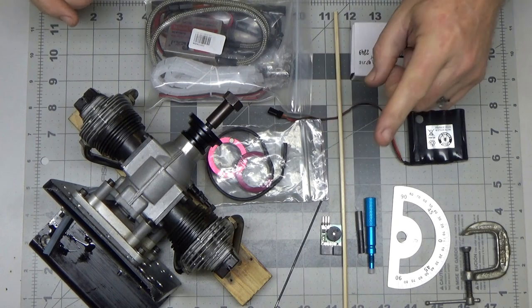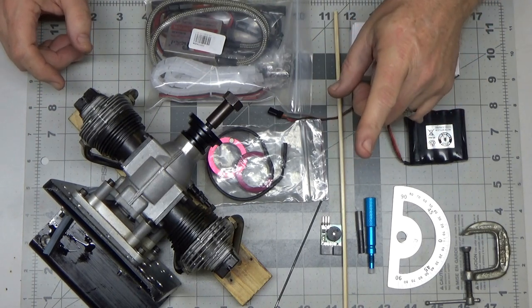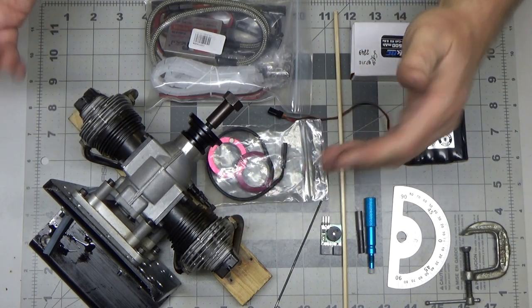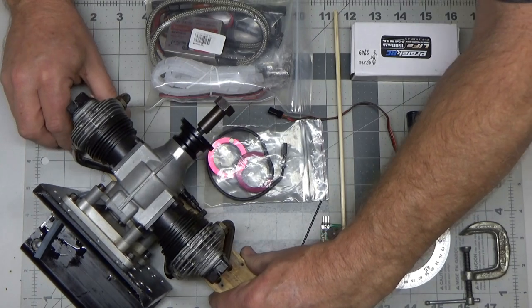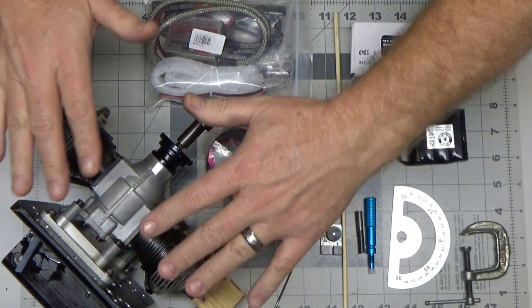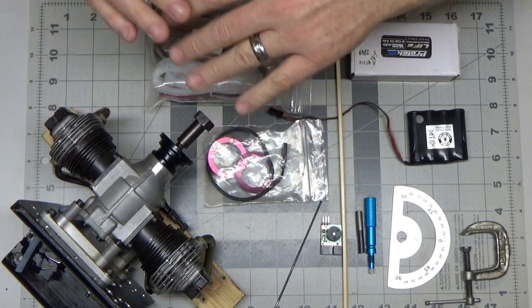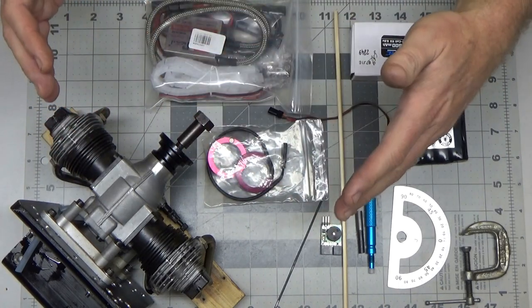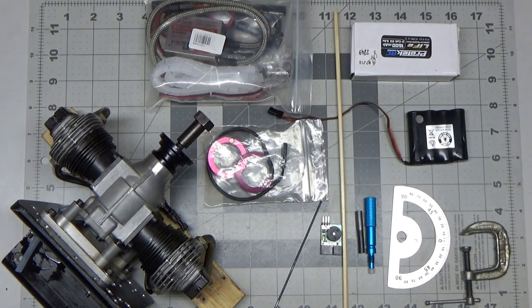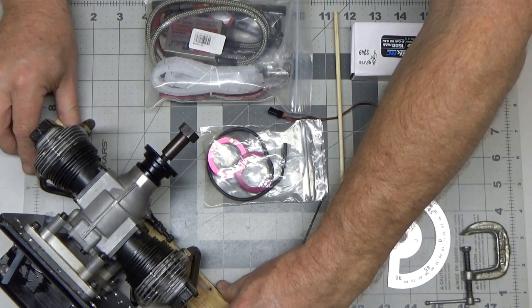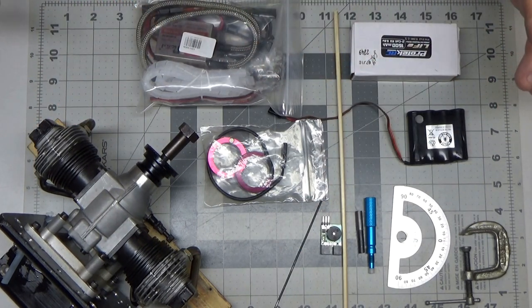So step one is determine what engine you want to install an ignition system on. I've already done that. I'm going to use my Magnum FT160. So let me just slide this out of the way here and I've got it on my upright because I just did a run of this engine on FAI fuel which I'll explain a little bit further in one of the next upcoming videos. So I'm just going to move this out of the way here and just point to the items I've got.